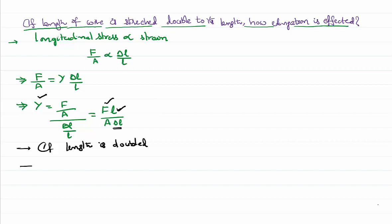How delta L gets affected is our question. Our further question is, if length is doubled, how does area of cross section get affected? This is an important question. Do we see like I double the length but still area of cross section remains the same? No, it's not possible.